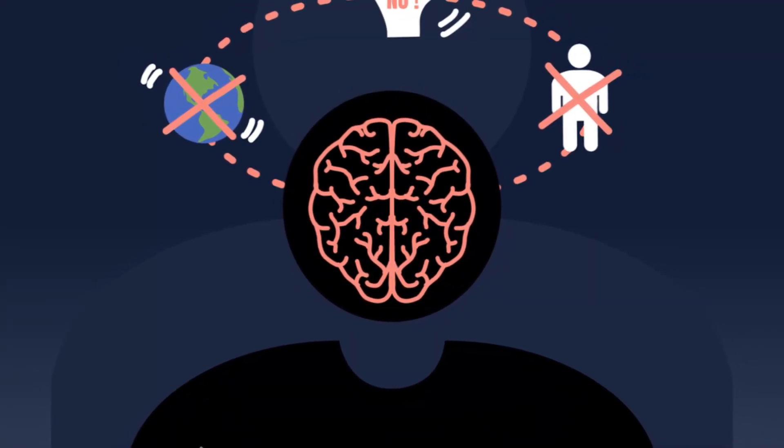The 10 signs include superficial charm, grandiose sense of self-worth, need for stimulation and proneness to boredom, pathological lying, manipulative behavior, lack of remorse or guilt, shallow affect, callousness and lack of empathy, parasitic lifestyle, and poor behavioral controls.